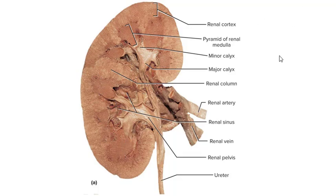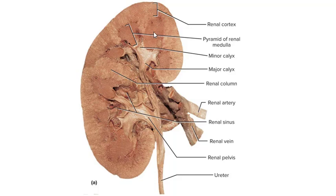Like other organs, the kidney has an outer cortex layer and an inner medulla. 'Medulla' means middle. Knowing what's happening in the cortex versus the medulla will be super important when we study kidney function.